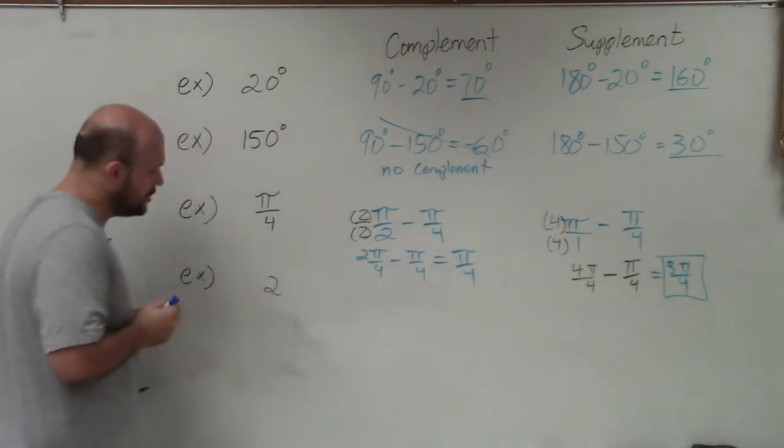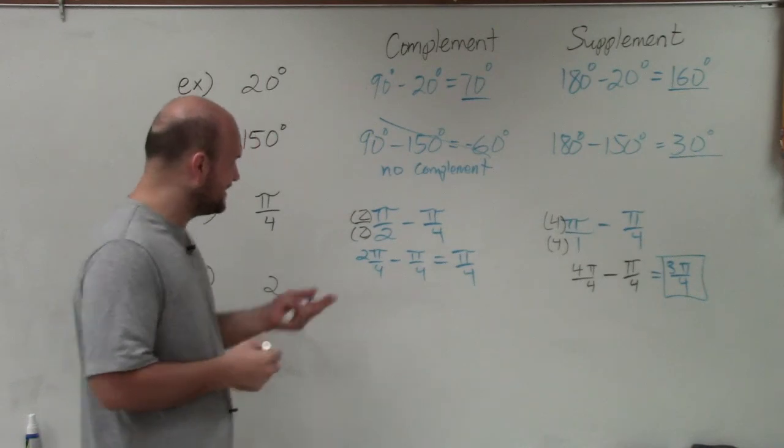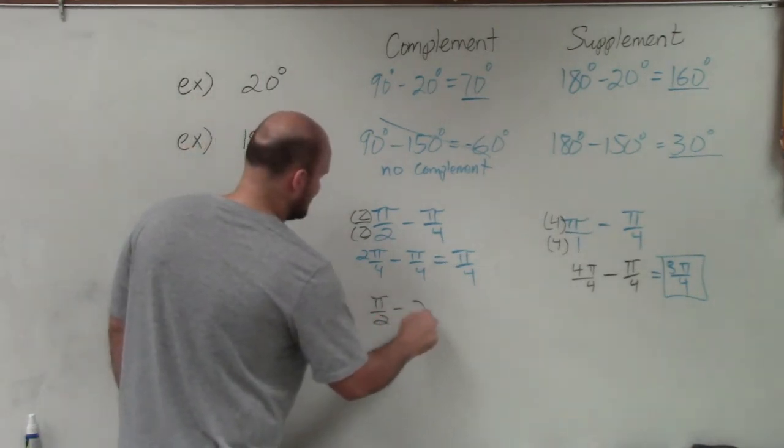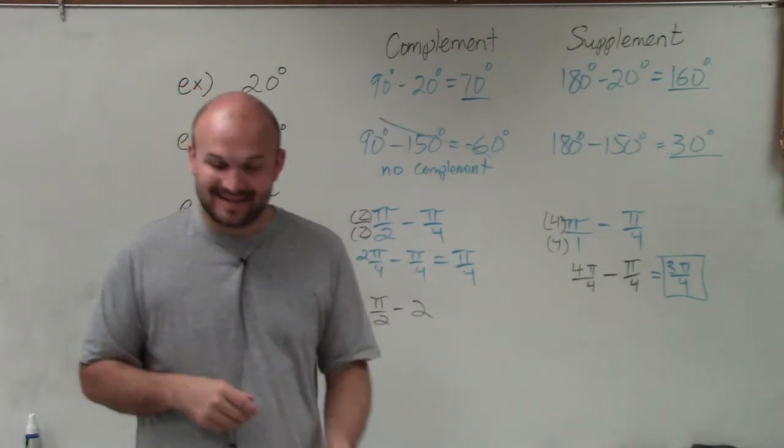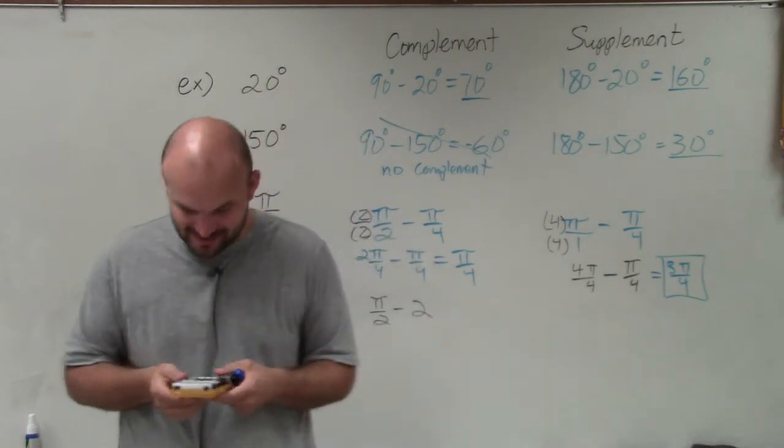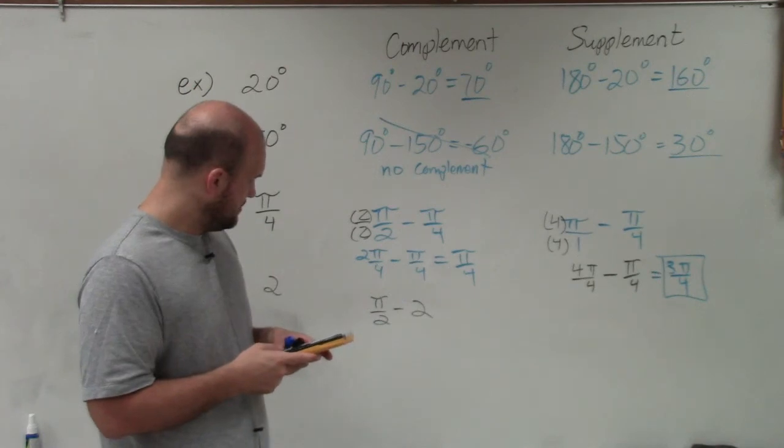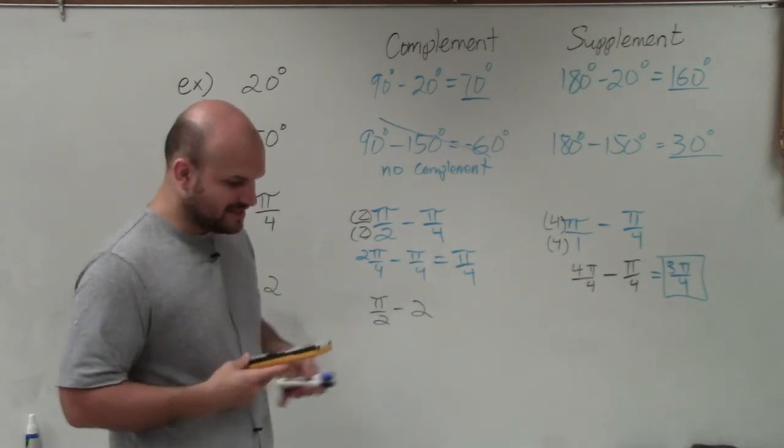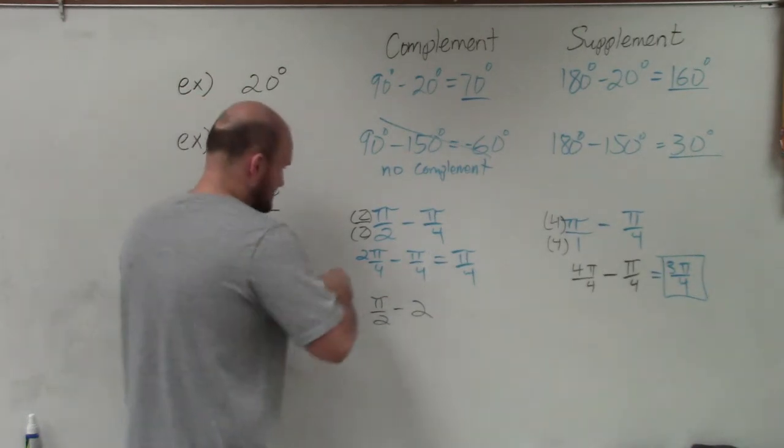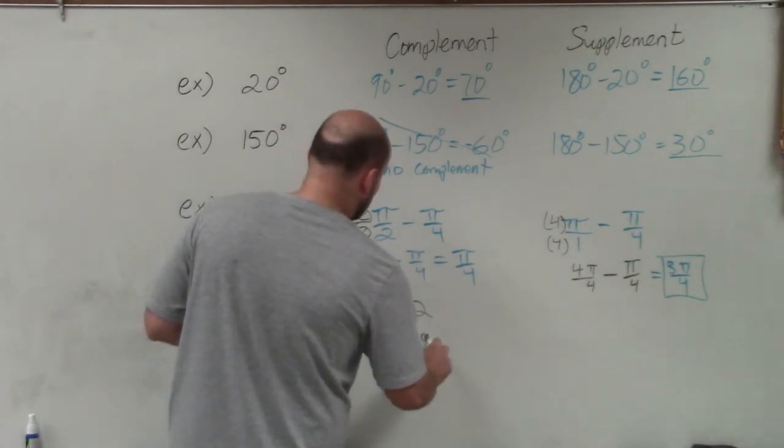On the last one is 2. Again, this is a radian format. Now this one can be a little bit more confusing because you can see, well, how are you going to do π/2 minus 2? Well, I am not going to do it on the board. I'm going to have to use my handy calculator and approximate the answer. So I'll do π divided by 2 minus 2, which is negative 0.429. Therefore, no complement exists. You cannot have a negative number as your complement, so there is no complement.